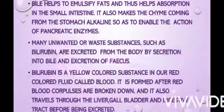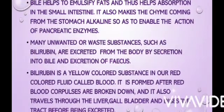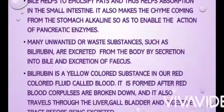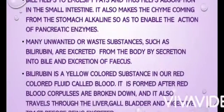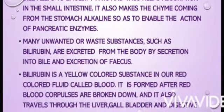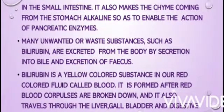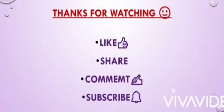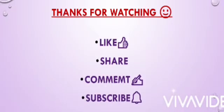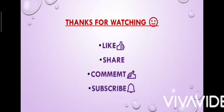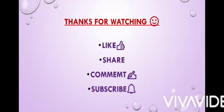Bilirubin is a yellowish substance found in our red-colored fluid called blood, which we have already studied. It is formed after red blood corpuscles are broken down, and it travels through the liver, gallbladder, and digestive tract before being excreted.